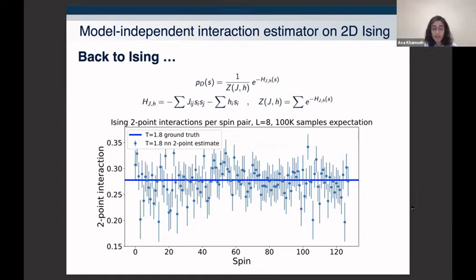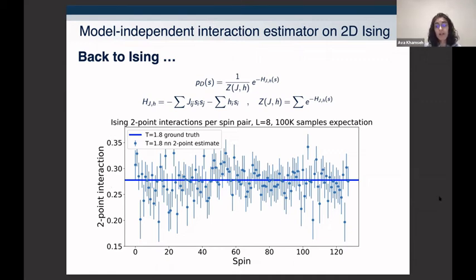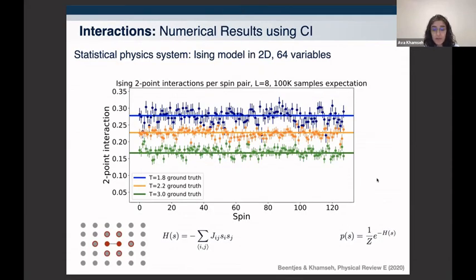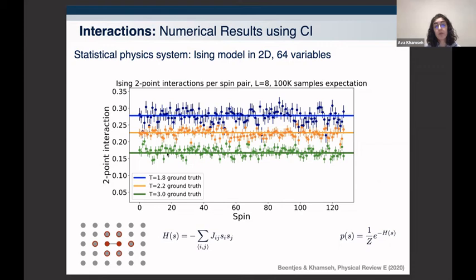Going back to the Ising model: Ising data is generated using Monte Carlo simulations at temperature T = 1.8, and we use the model-independent formulation — completely blind to the generating distribution — to estimate interactions. For every pair of spins we get the correct value within two sigma. Doing this at higher and lower temperatures, using conditional independence tests as preprocessing to handle data requirements, we correctly extract all couplings and the system clearly distinguishes configurations near the critical value from low-temperature configurations.